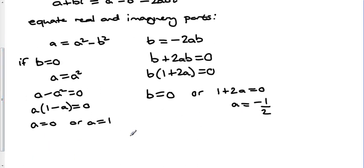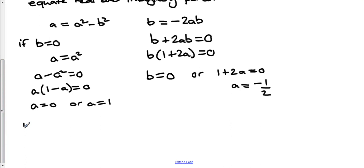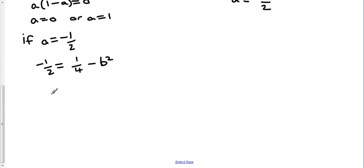Now we also had our other solution where a is negative a half. So if we put that into our equation on the left hand side, we've got minus a half equals minus a half squared, which is a quarter, minus b squared. So I'm going to add a half onto both sides: 0 equals 3 quarters minus b squared.